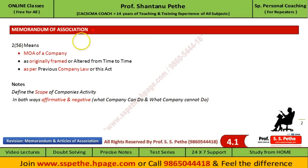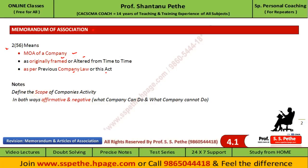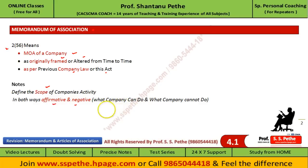You have to write the definition of Memorandum given under Section 2(56). It means Memorandum of Association of a company originally framed or altered from time to time as per the previous company law or this act, that is Companies Act 2013. It defines the scope of company's activities — what company can do and what company cannot do is fully described in the Memorandum, in both ways: affirmative and negative.